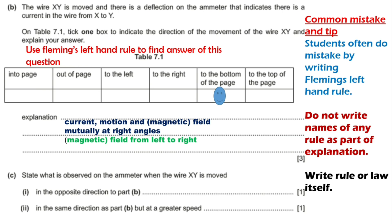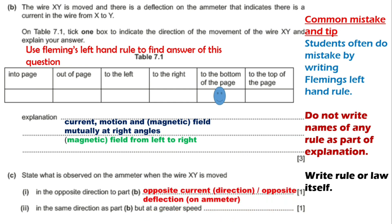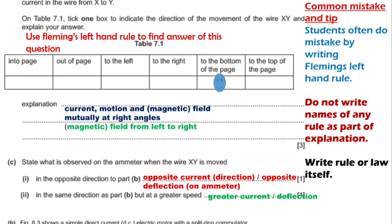Part C: state what is observed on the ammeter when the wire XY is moved in the opposite direction — the answer will be opposite deflection. When we reverse the direction of movement of XY, the deflection in the ammeter will also be opposite. Then, when moved in the same direction as part B but at a greater speed, there will be a greater current and therefore greater deflection.